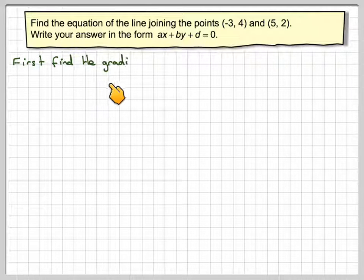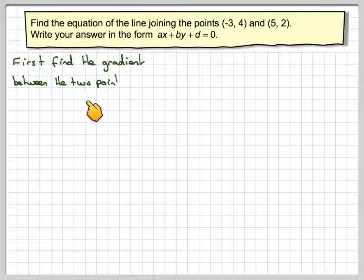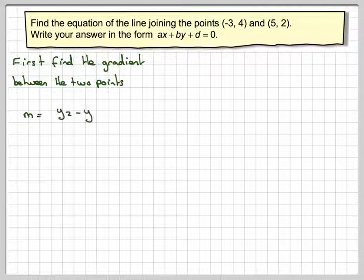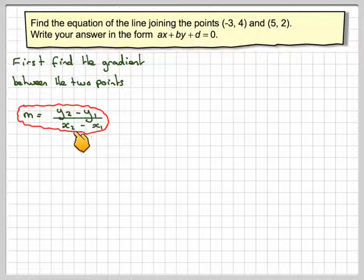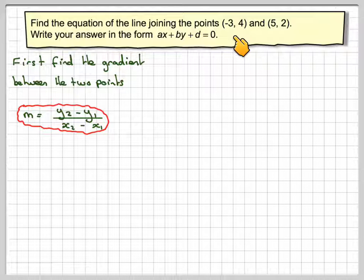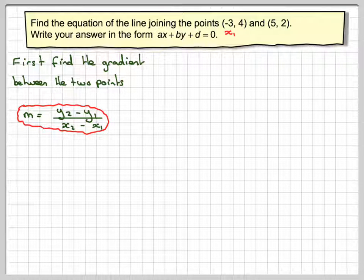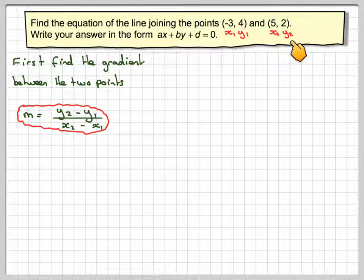First find the gradient between the two points. We have a formula for that: m = (y2 - y1) / (x2 - x1). We need to label this: -3 is x1, 4 is y1, 5 is x2, and 2 is y2.